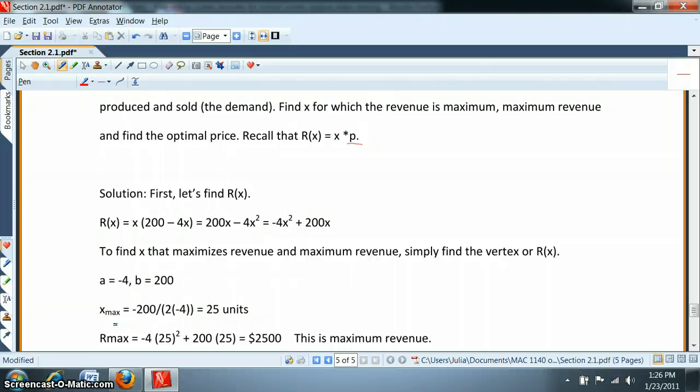We can easily find the X of the vertex, which we'll call X of the maximum, which happens to be 25 units. And we can easily solve for maximum revenue by plugging in the X into the original equation right here, and we'll figure out the revenue is $2500.